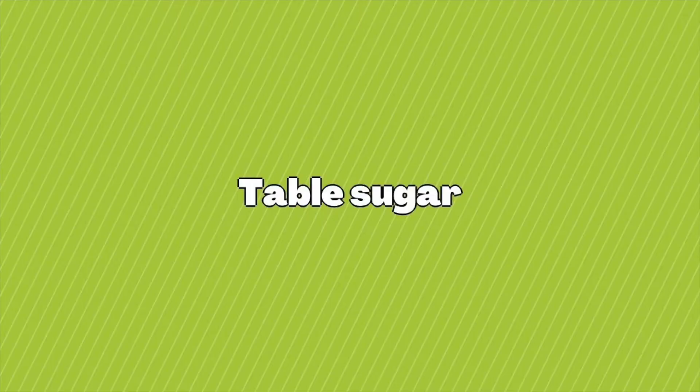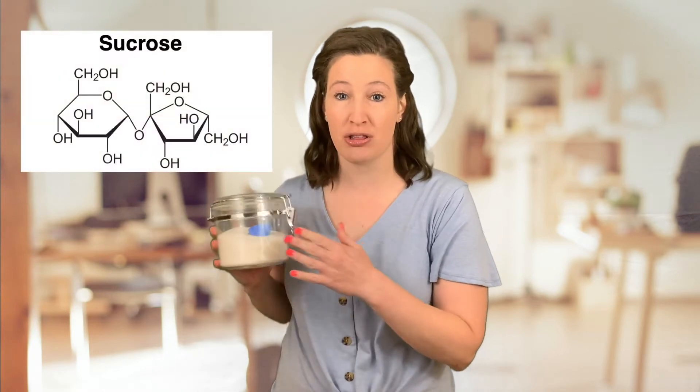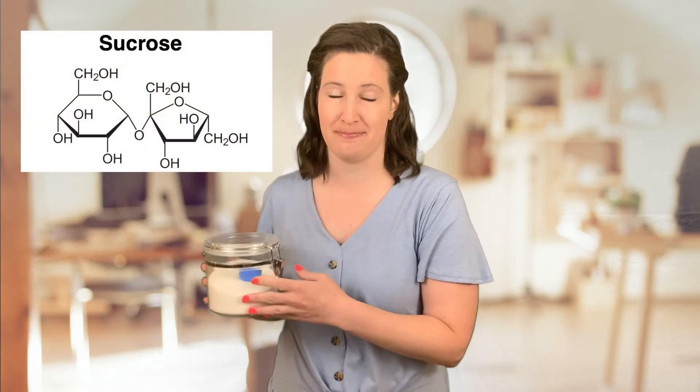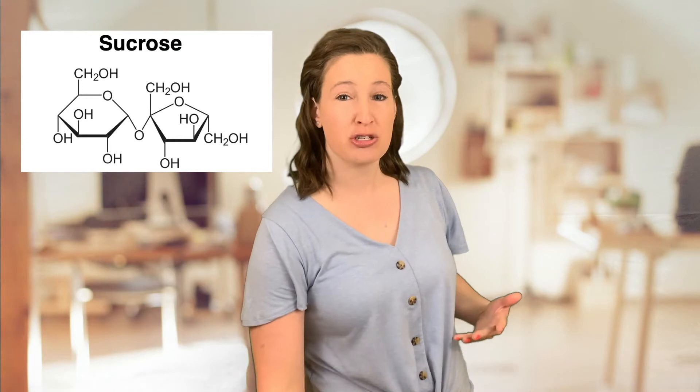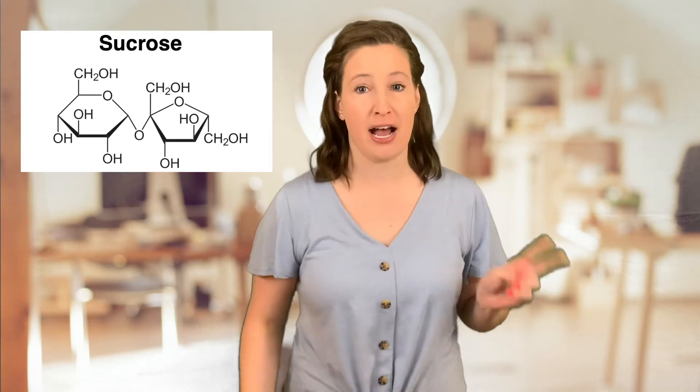Let's start with the most obvious type of sweetener. When most of us say sugar, what are we talking about? It's usually these little white crystals. You'd call this table sugar or granulated sugar, but really sugar is a broad term for a lot of molecules. What's actually in here is a sweetener called sucrose — these are sucrose crystals. We usually get sucrose from two main sources: sugar beets or sugar cane.